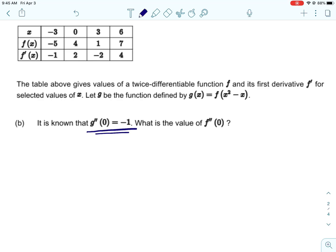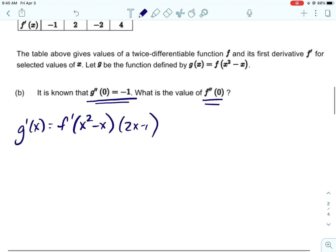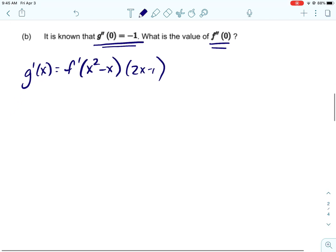Alright, and then for b, we have some information about the second derivative of g, that is g double prime of 0 is negative 1. And then we're going to use that to figure out f double prime of 0. So I'm going to go back and just write down my first derivative again so I can see it. And then I'm going to find the derivative of this, and so this one is a little more challenging because we are going to still have to use a chain rule dealing with this part, and then because this is a product, we're going to have to use the product rule.